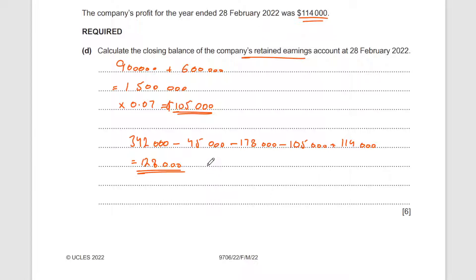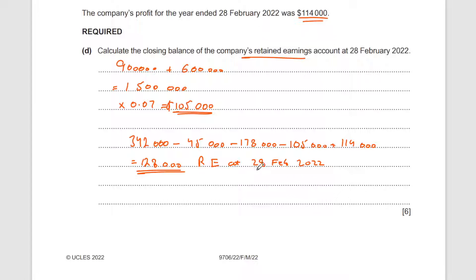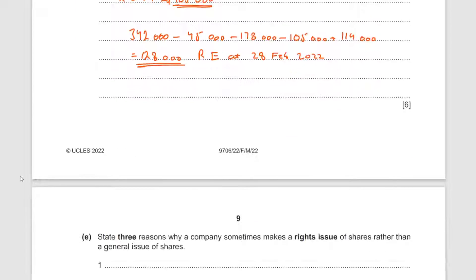That is your closing retained earnings — write that in full — at 28th February 2022. It's good to label your answer clearly so the examiner knows what it represents. Let's move on.